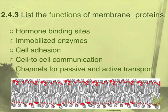Another function of a peripheral protein would be cell adhesion. Most likely this would be an outward peripheral protein, and it would allow cells to physically attach to other cells or to other structures, such as extracellular material. These are proteins capable of binding to something else in some way.